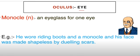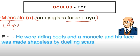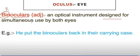He wore riding boots and a monocle, and his face was shaped by dueling scars. Mono means single, oculus means eye — so a monocle is an eyeglass for one eye. Binoculars are an optical instrument designed for simultaneous use by both eyes. He put the binoculars back in their carrying case.